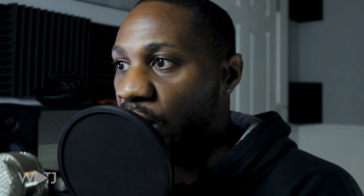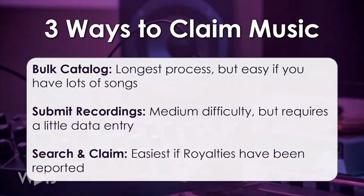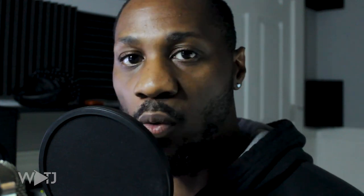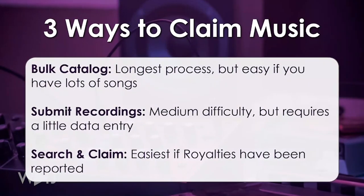There are three ways that you can claim your music, and I'm going to show you all three in this video. Number one is the bulk catalog — this is the longest process but the easiest, especially if you have a lot of songs. You can get it done in about an hour of cataloging your work. The next method is submitting recordings, which is piece by piece, filling in all the metadata for your songs — adding the title, ISRC code, and all that. It's medium difficulty and may actually take longer than the bulk catalog, which is my favorite.